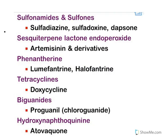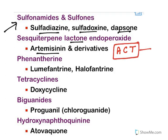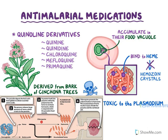Quinoline-containing compounds include quinine and quinidine. Diaminopyrimidine derivatives include pyrimethamine. Sulfonamides such as sulfadiazine, sulfadoxine, and dapsone can also be used to treat malaria. Lactone derivatives are the artemisinins, which are effective against many stages of Plasmodium and used in artemisinin combination therapy (ACT). Phenanthrene derivatives include lumefantrine and halofantrine; tetracyclines like doxycycline are also used. Biguanides include proguanil, and hydroxynaphthoquinone includes atovaquone.